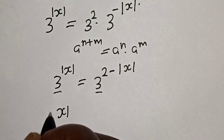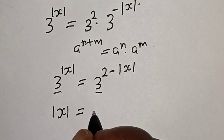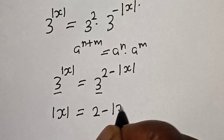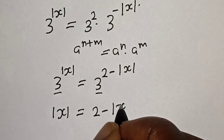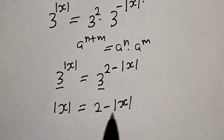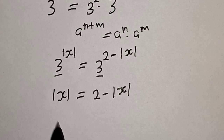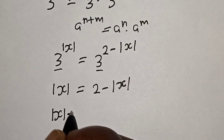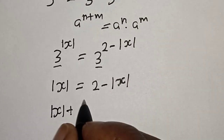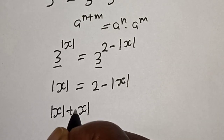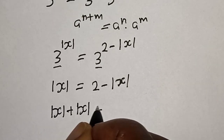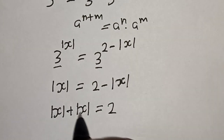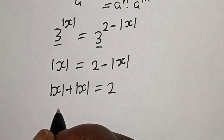Now they have the same base, so absolute value of s is equal to 2 minus absolute value of s. Collecting like terms: absolute value of s plus absolute value of s is equal to 2 — the minus crosses over and becomes plus — giving us 2 times absolute value of s is equal to 2.